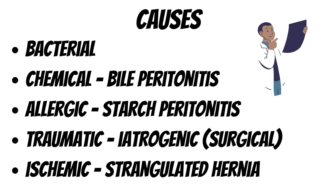In strangulated hernia, when the bowel in the hernial content is getting strangulated, the blood flow to that part of the bowel and peritoneum is blocked, leading to ischemic changes and hence peritonitis can occur.